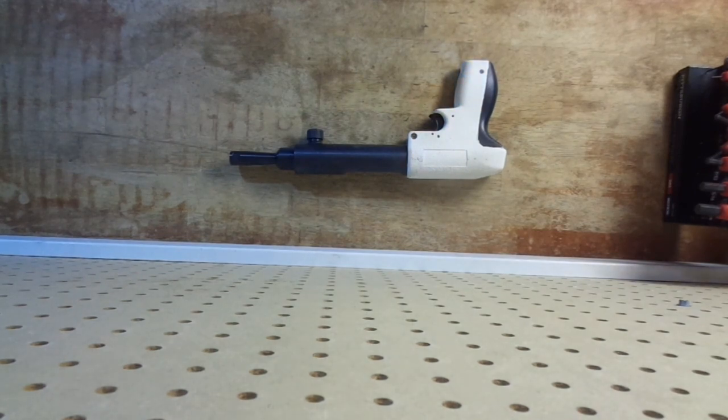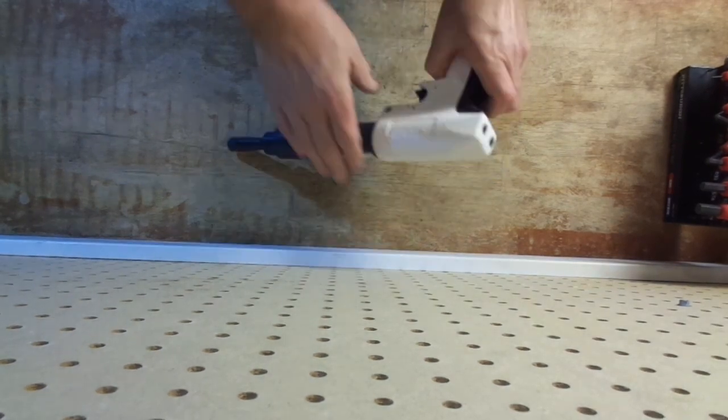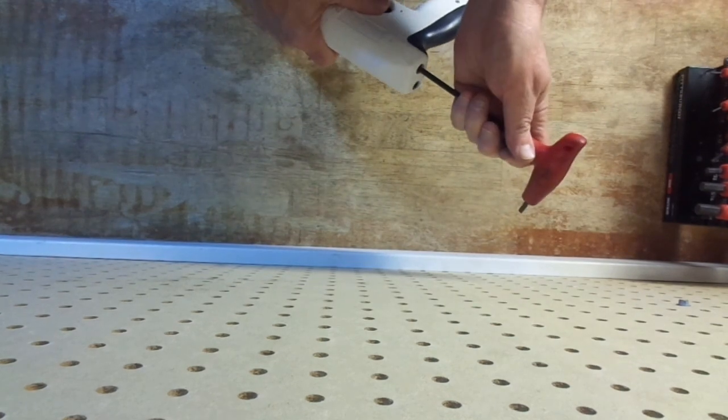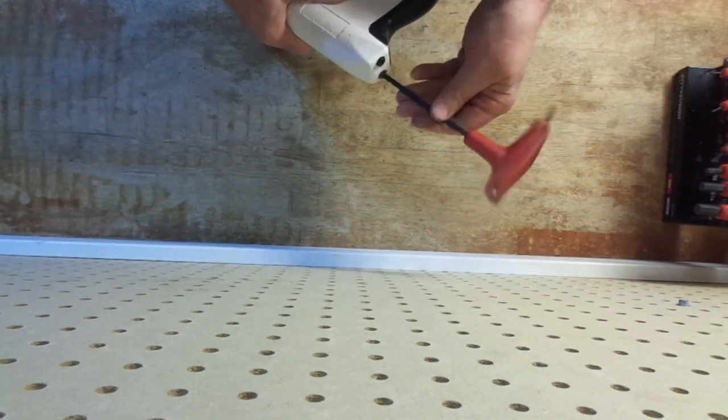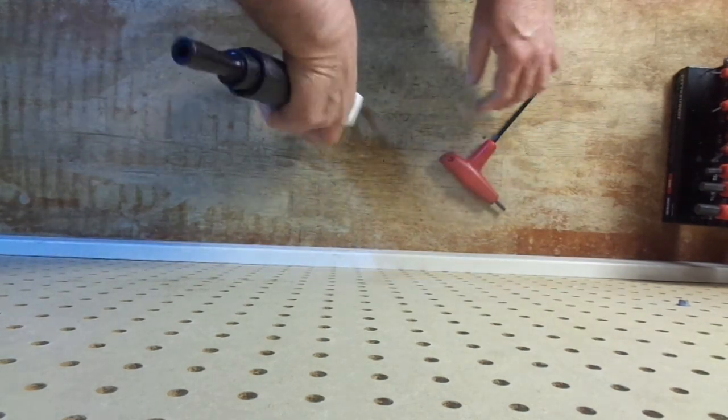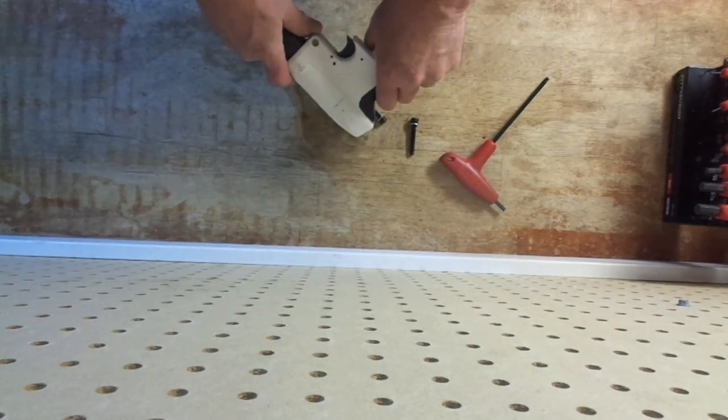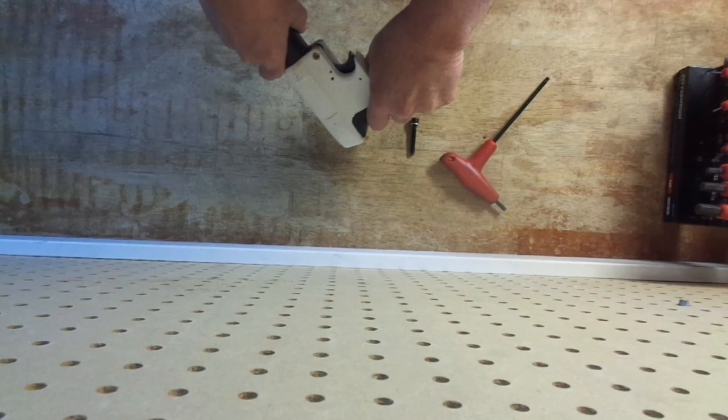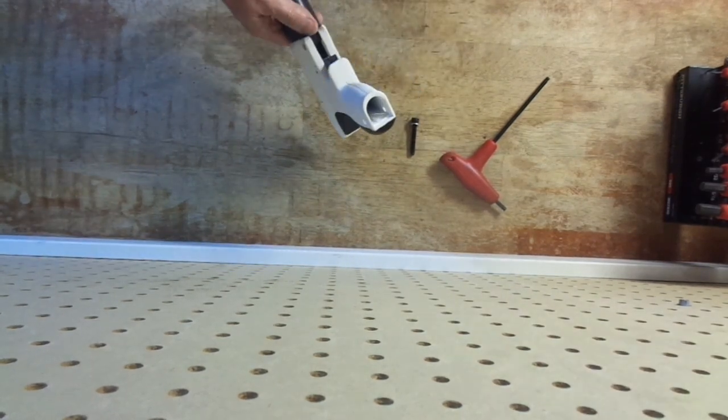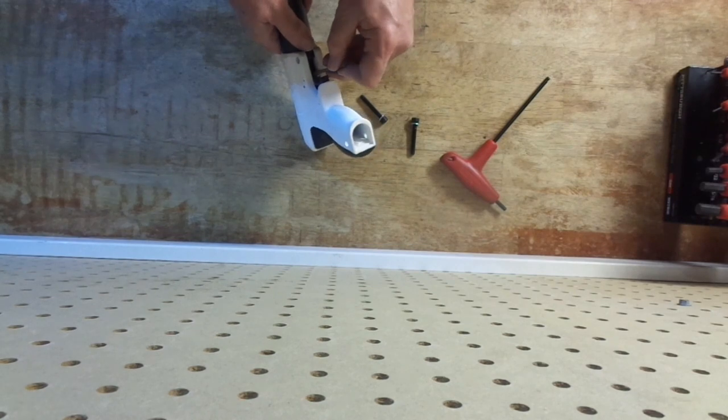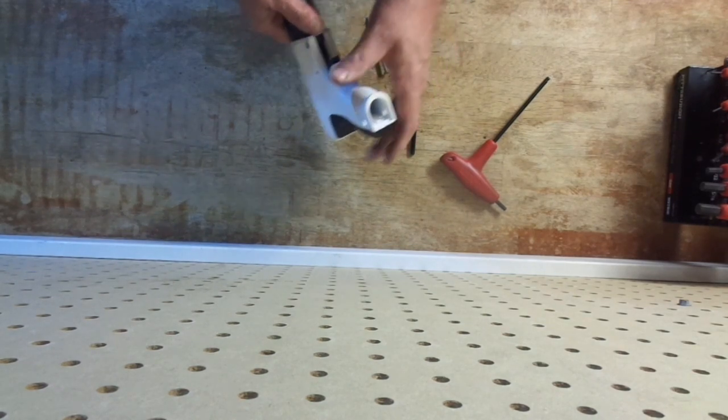So anyway, to start, remove the handle bolts, of course. You can take this out if you want, but you should be able to get it apart without removing that. Just get the sear down.